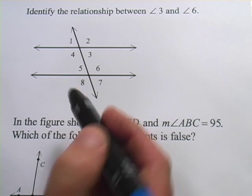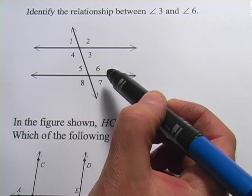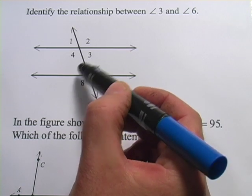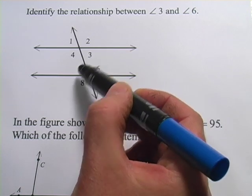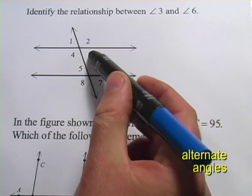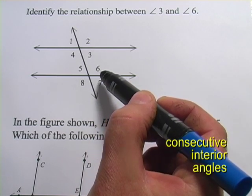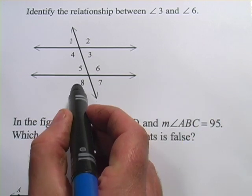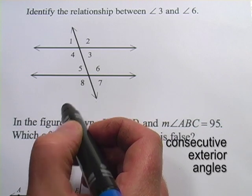Also angles can either be right next to each other, like three and six, and those are consecutive angles, or they can be not right next to each other, across from each other here, like three and five, and those are alternate angles. So three and six are consecutive interior angles, three and five are alternate interior angles, seven and eight are consecutive exterior angles.